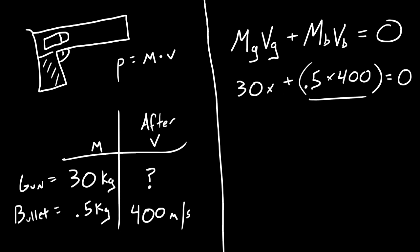Let's go ahead and figure out this part right here. First of all, whenever you take 0.5 times 400, you get 200. Now, what we have right now is 30x plus 200 equals zero.